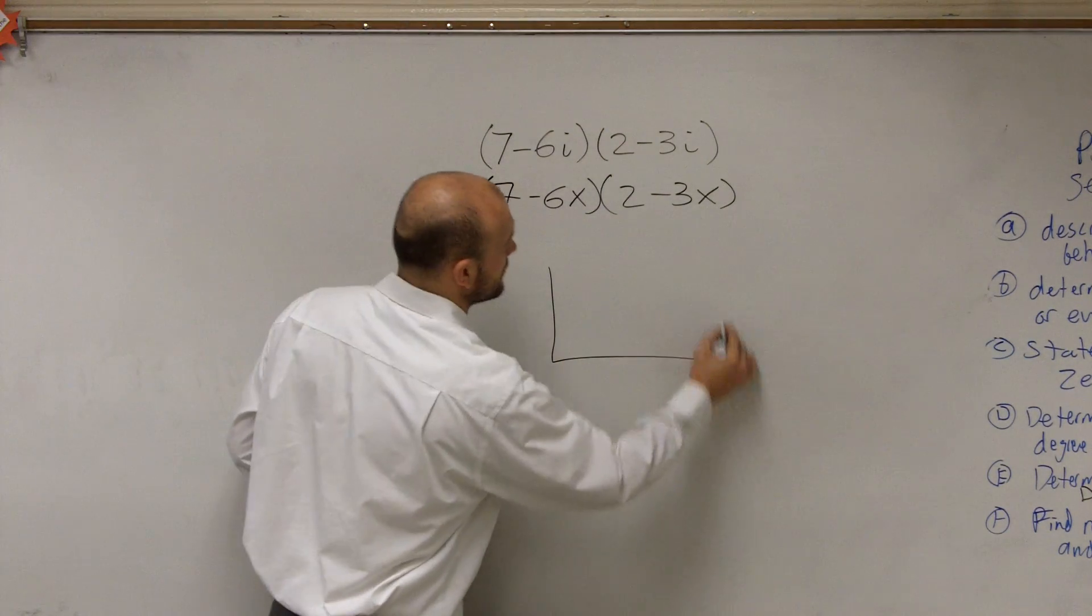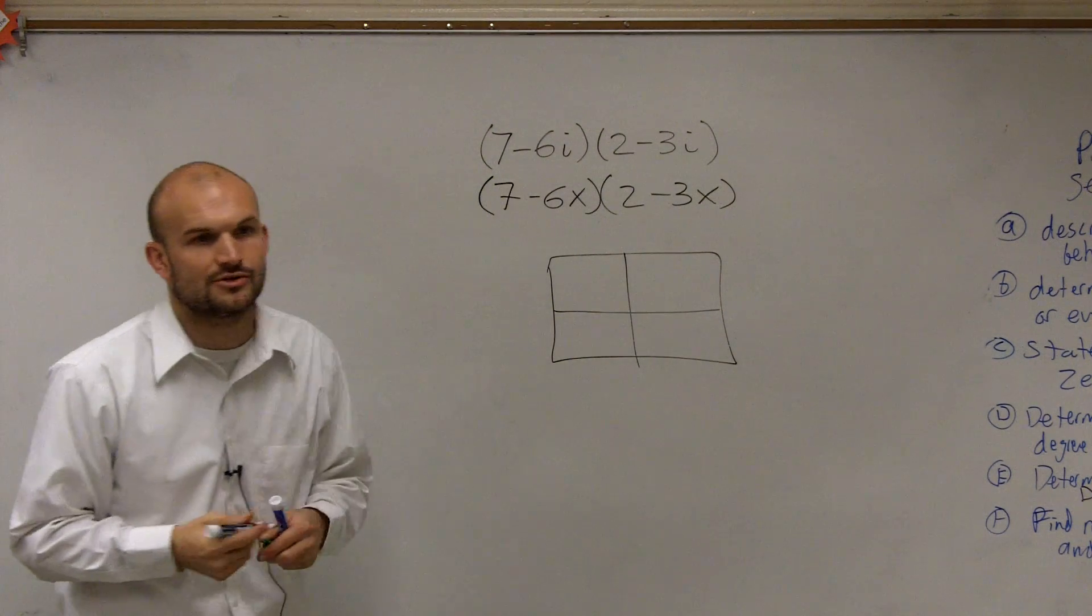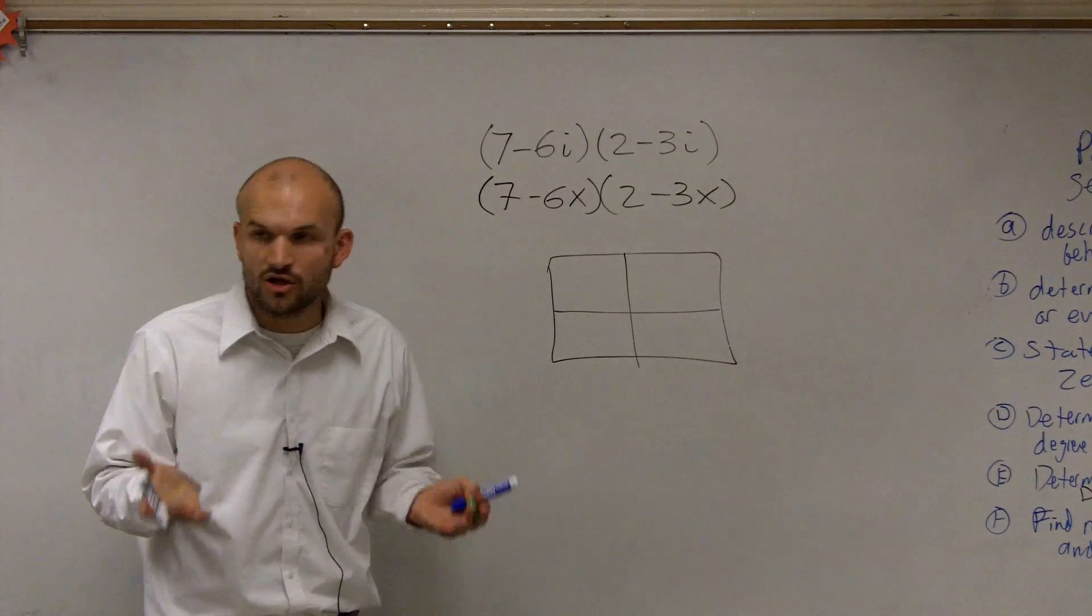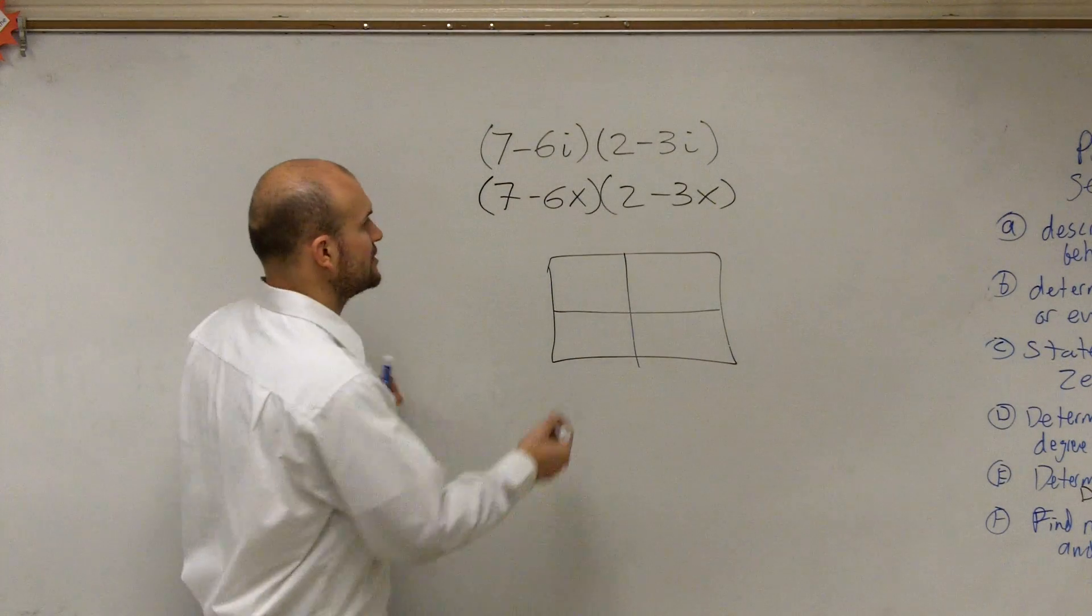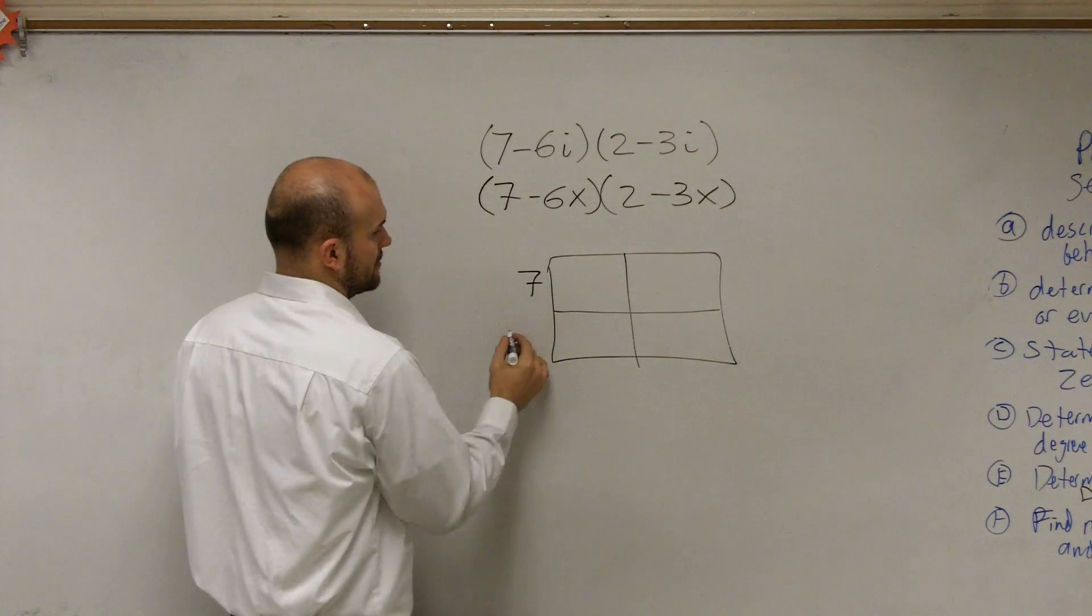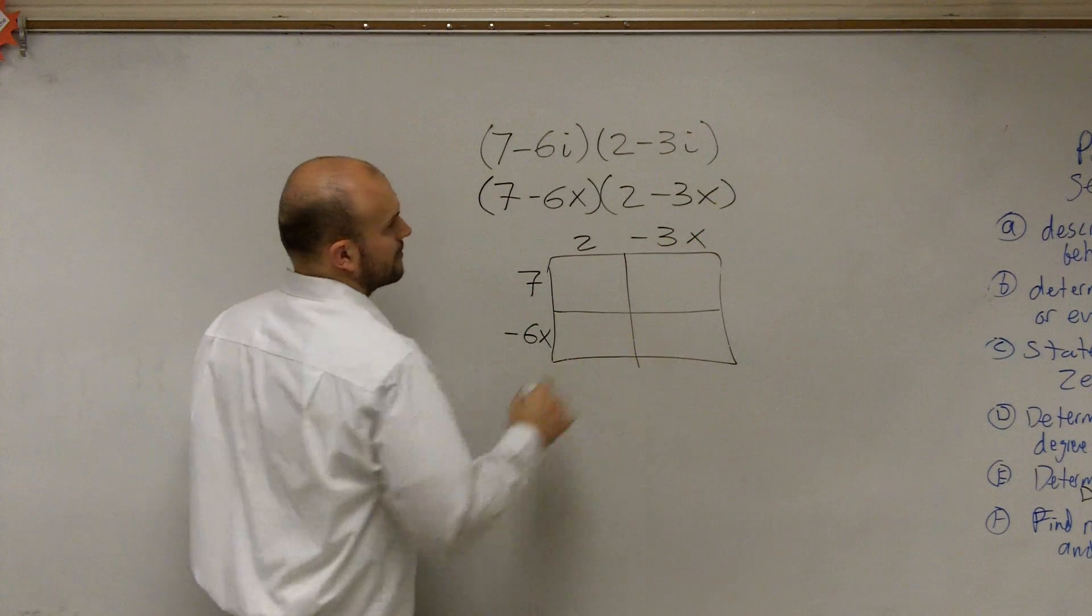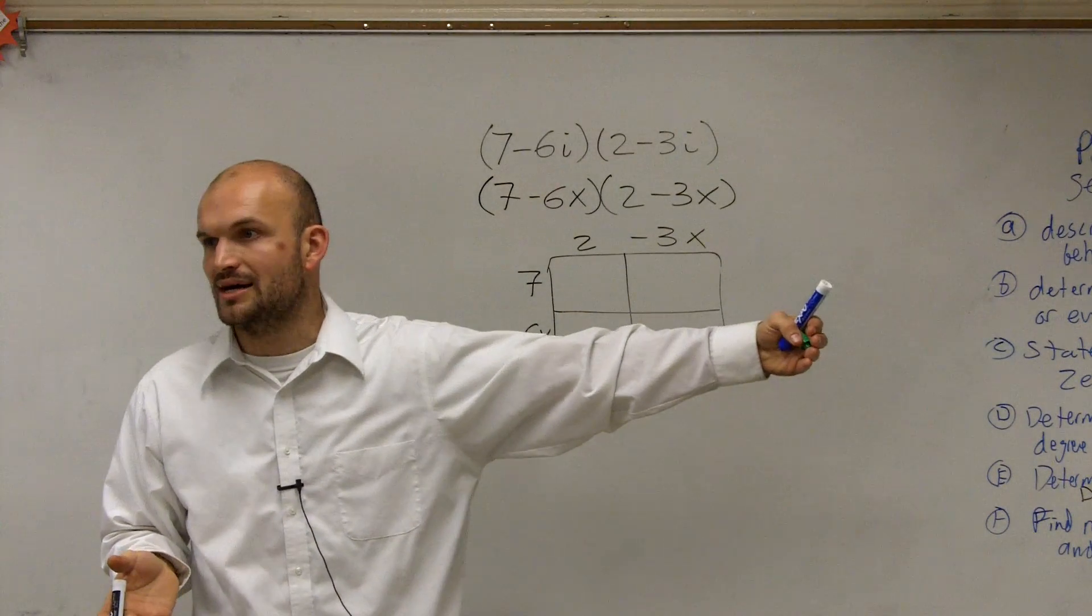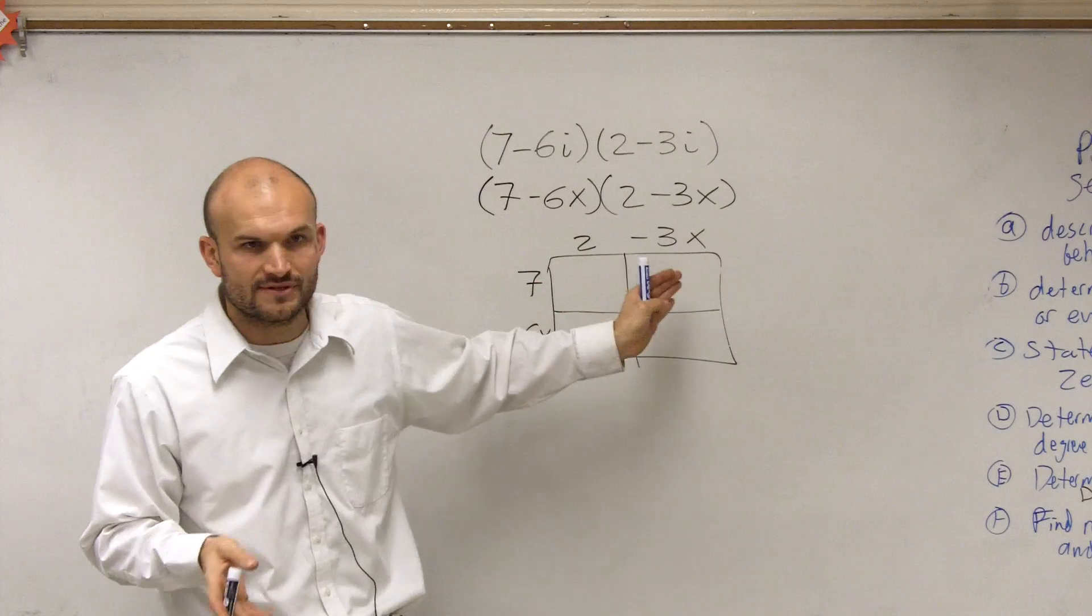So when we multiply these two binomials, the best way that I like to do it to keep everything organized is to create a box. Because remember, when multiplying two terms, you're really creating an area. So what I do is I take one term on top and I put the other term on the other side. And if it was a trinomial, then you'd continue another set of boxes. Since it's a binomial and a binomial, I break up my box into two different sections.